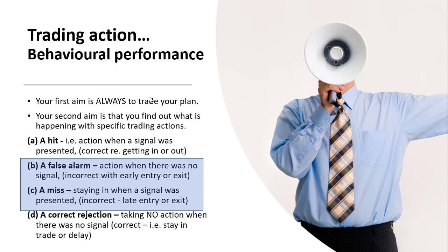There are all sorts of reasons for false alarms and misses, and that will be the topic of future videos. Things like fear of missing out (FOMO) and other cognitive biases are often causes, as are trading plan statements that aren't specific and unambiguous, meaning you don't have consistency in action. Make this part of your measurement because it will serve you well going forward. It's not about beating yourself up, but rather knowing what's going on so you can address it — awareness is the first step in any sort of development, including the behavioural aspects of your trading.